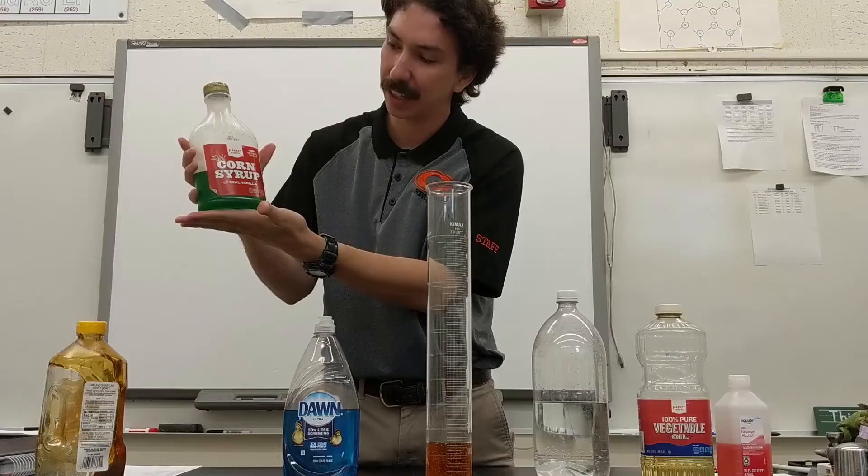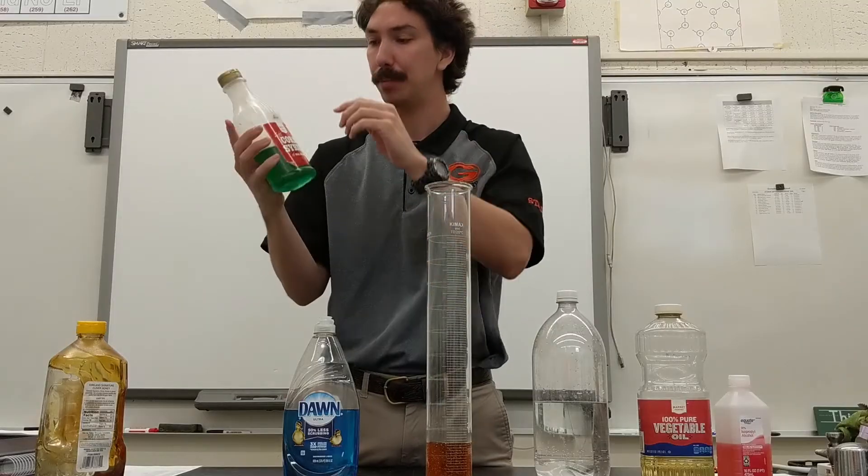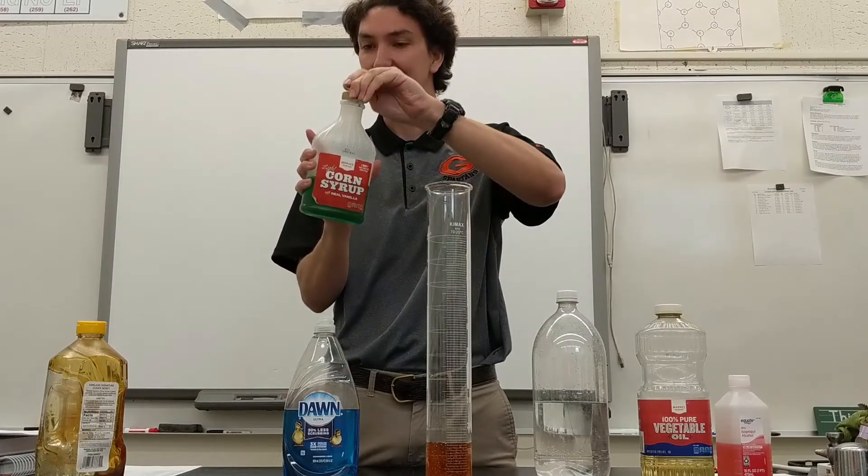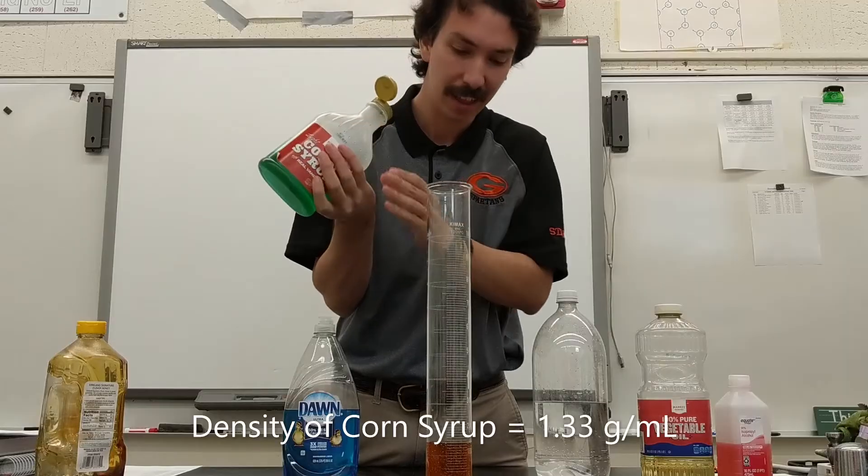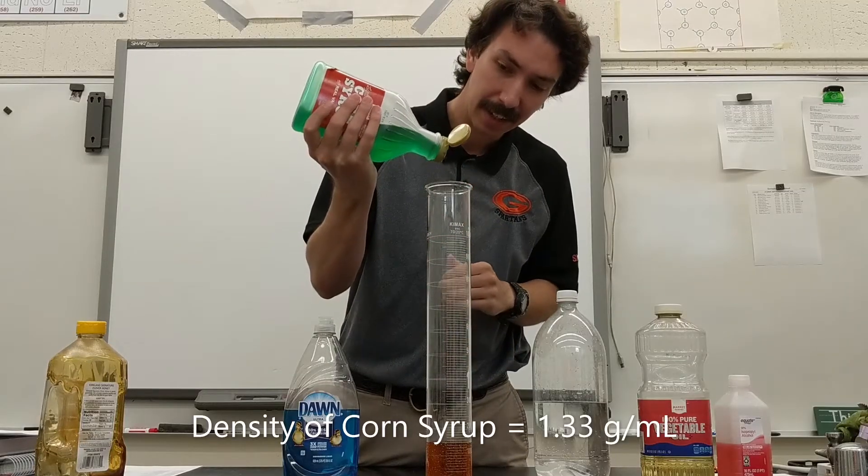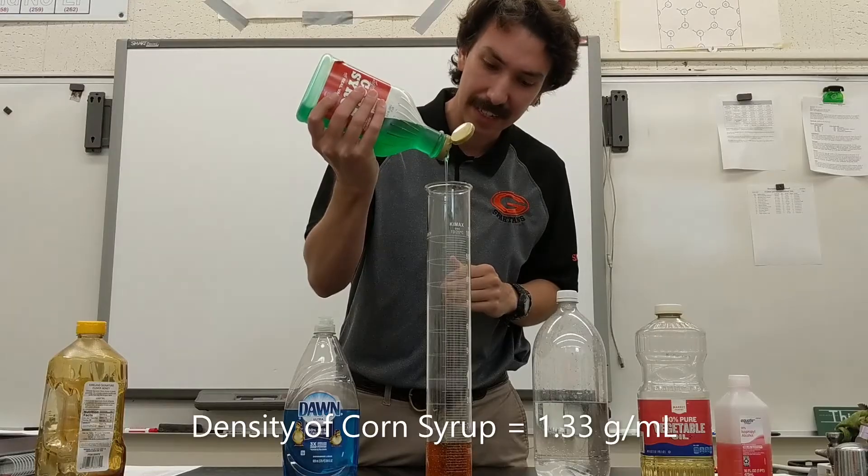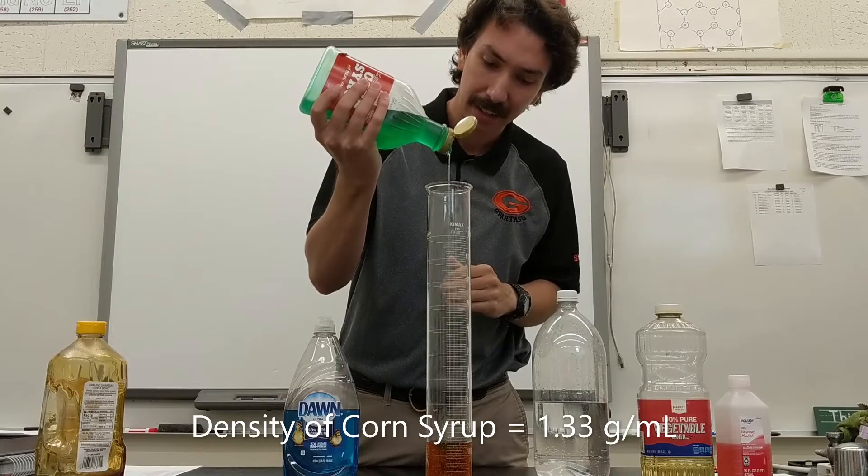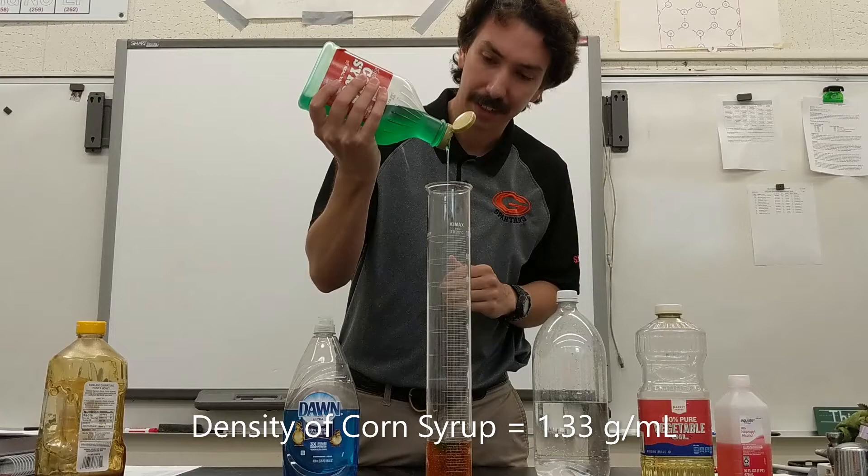Next, this is just regular corn syrup. But I put some green dye in it just to give it a nice different color than our honey. So I'll add this in next. And this is less dense. So you'll see as it hits the honey, it will float on top of it.